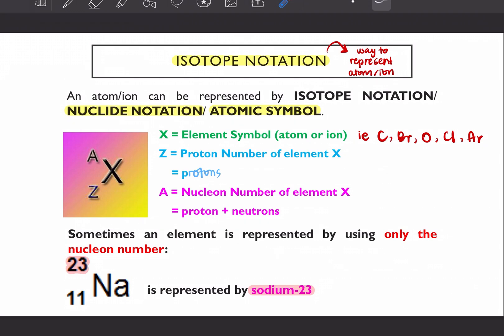So sometimes an element is represented by using only the nucleon number. So selain daripada cara ni, isotope notation ni untuk represent ion atau atom awak, you can also represent your atom or ion by nucleon number. For example, if you have sodium here, you nucleon number dia kan? So you can also represent this element as sodium 23.